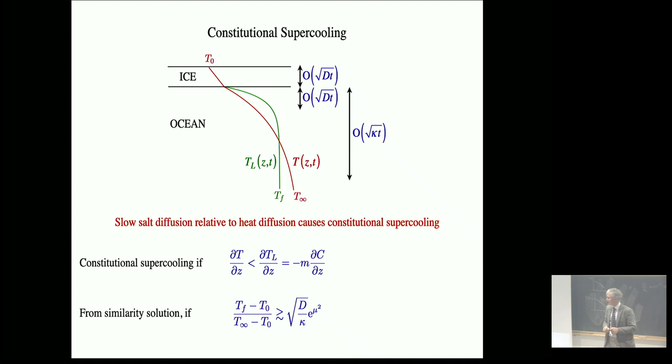This basically says: if I cool very gently, so if my undercooling is small, I might escape and keep this interface planar. But in typical natural situations or in the laboratory, if I make this undercooling larger than this critical quantity, then I will get morphological instability.